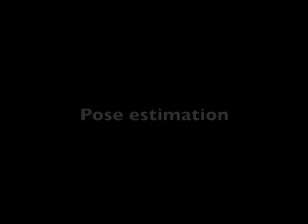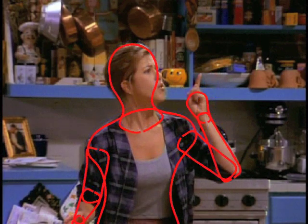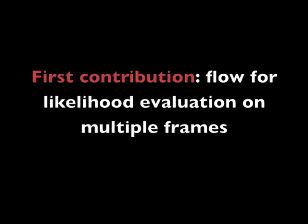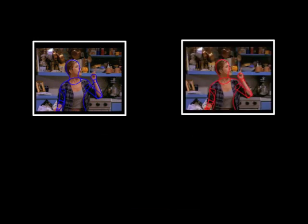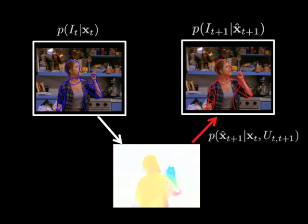For pose estimation, we want the hypothesised puppet and the flowing puppet both to match the image evidence in their frames. A pose that is good on the current frame and is consistent with image evidence and flow at adjacent frames is more likely to be correct. The key idea is to use the flow to link the two frames. If a pose matches the image evidence at one frame and the corresponding flowing puppet matches the image evidence in an adjacent frame, then we have a good solution.